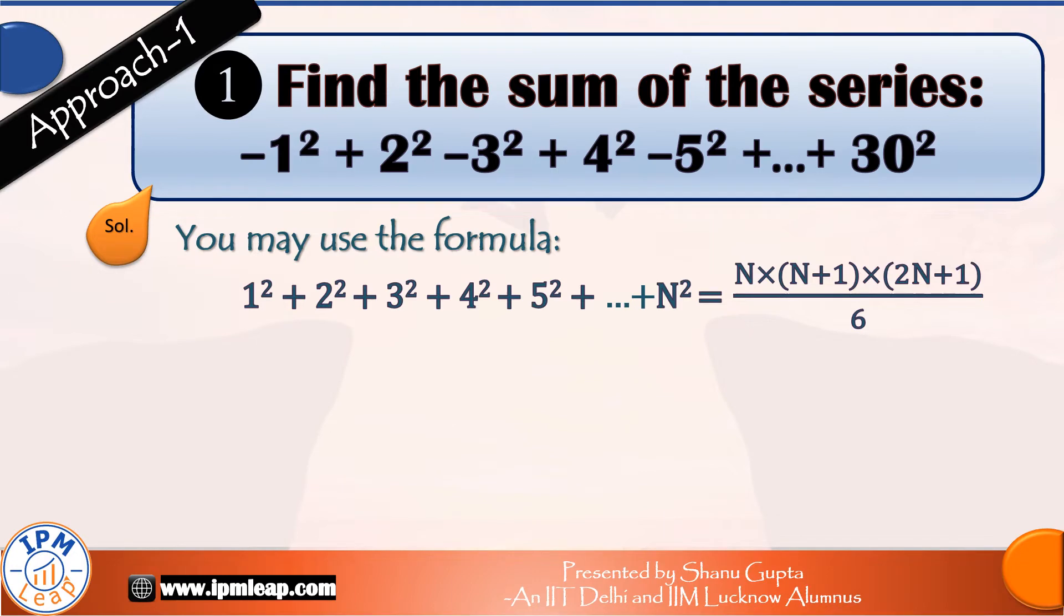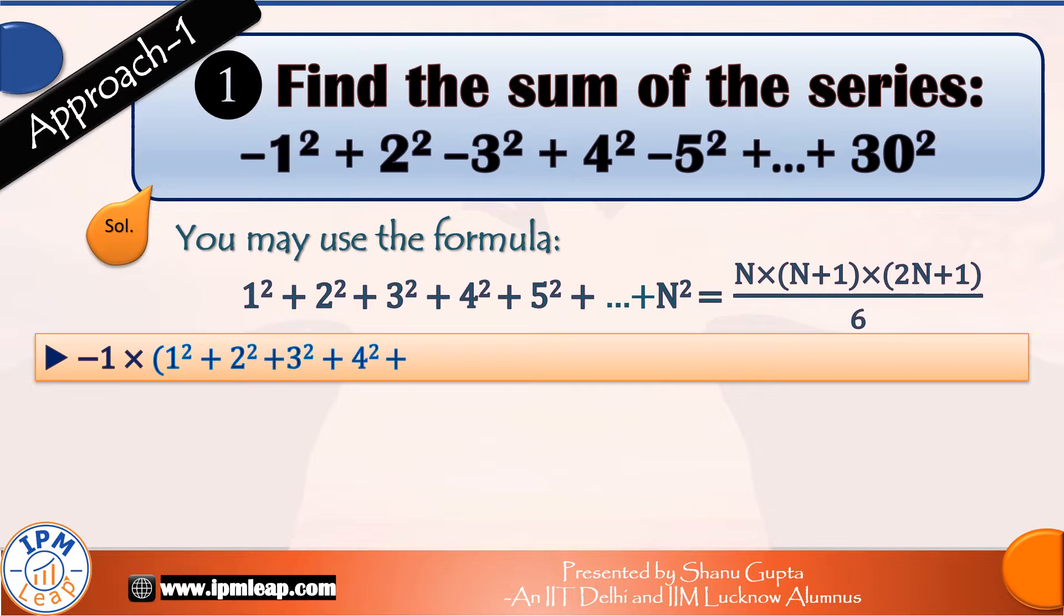Now we can see two different series of squares. In the first we have the sum of squares from 1 to 30, and in the second one we have to sum up squares from 1 square to 15 square. So we may apply this formula separately to both these series to obtain our sums.